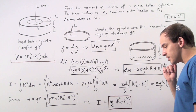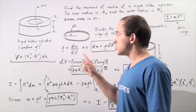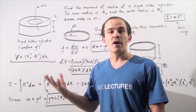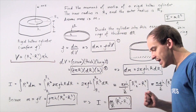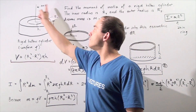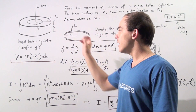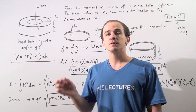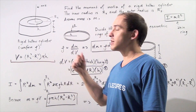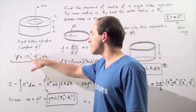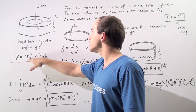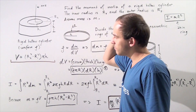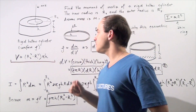We are making the assumption that the density of the object, given by the Greek letter rho, is constant — so the mass per unit volume is constant. From a textbook, the volume of a hollow cylinder is given by: V = π·h·(R2² - R1²), where R2 is the outer radius, R1 is the inner radius, h is the height, and π ≈ 3.14.